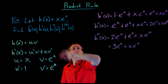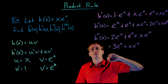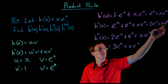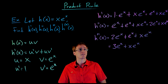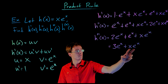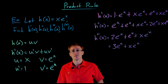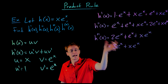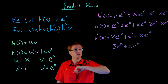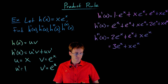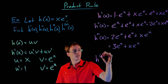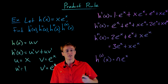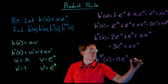Hopefully we can see the pattern emerging. The first derivative gave us the original function back plus one copy of e to the x. The second derivative gave us the original function back plus two copies of e to the x. The third derivative gave us the original function back plus three copies of e to the x. So for the nth derivative, we get n copies of e to the x plus the original function: h to the n of x equals n times e to the x plus x times e to the x.